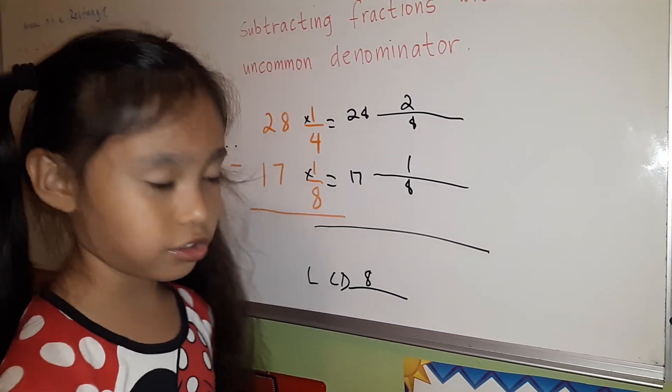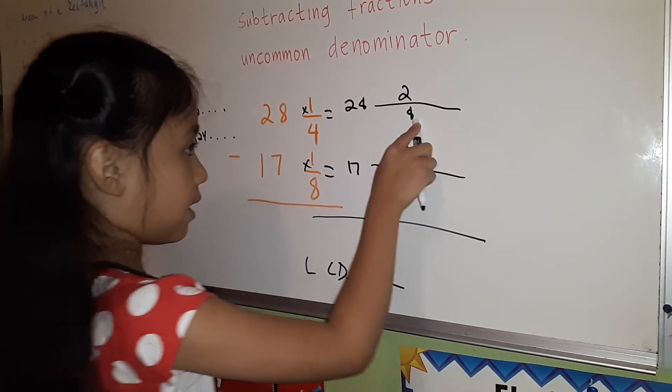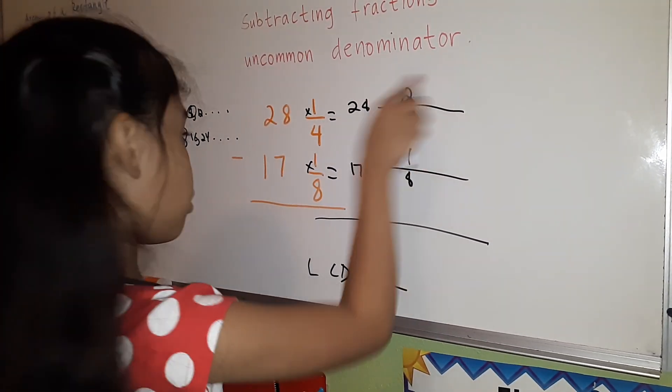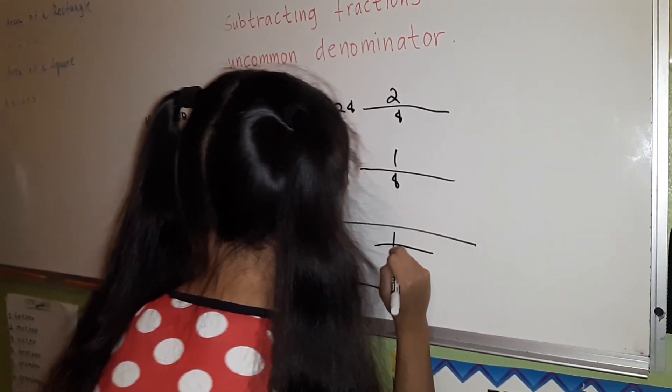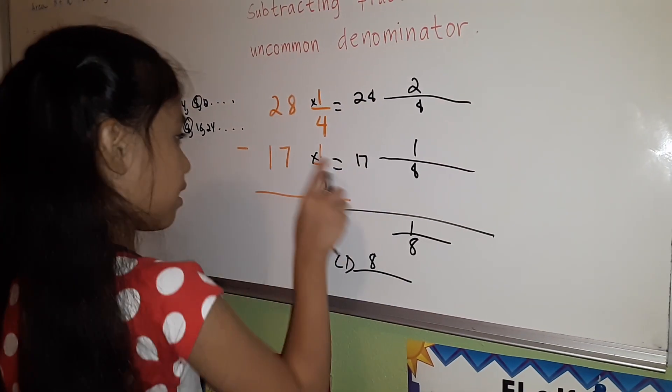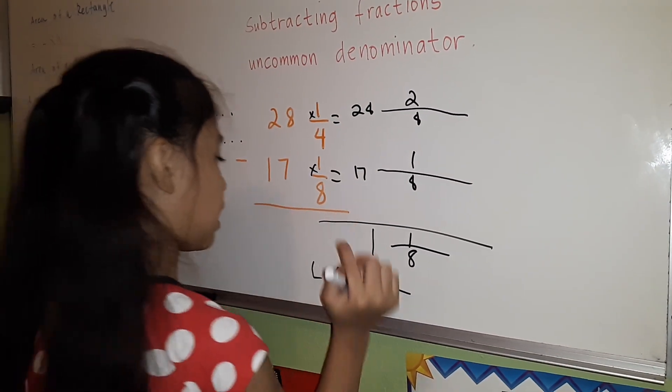We're going to subtract the fractions. You can only subtract the numerators and bring down the denominator. 2 minus 1 equals 1, bring down 8. Then subtract the whole numbers: 28 minus 17 equals 11.